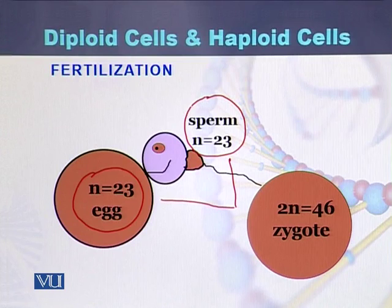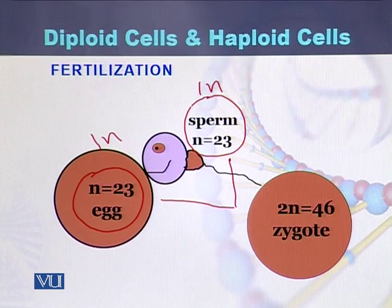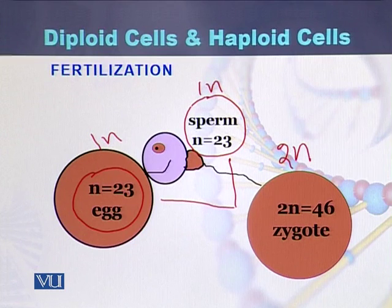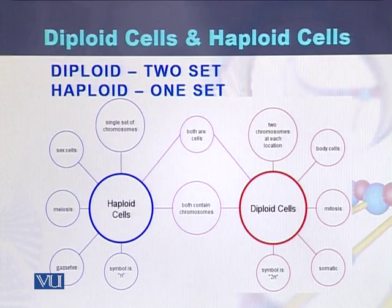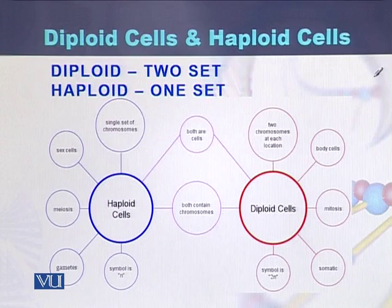The sperm is 1N, the egg is also 1N, and in the zygote they become 2N, so the number of chromosomes restores to 46. Diploid cells contain 2 sets of chromosomes, while haploid cells contain a single set of chromosomes.